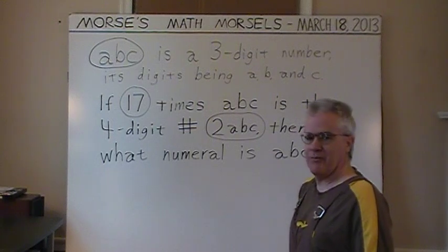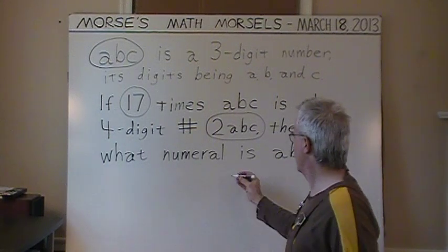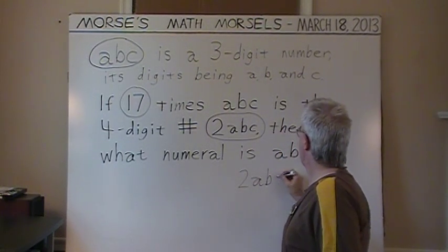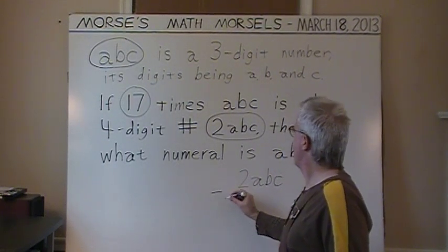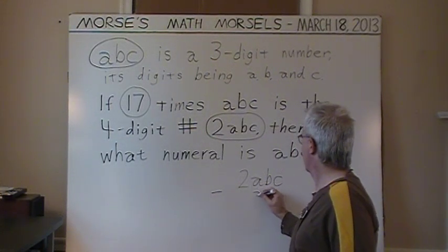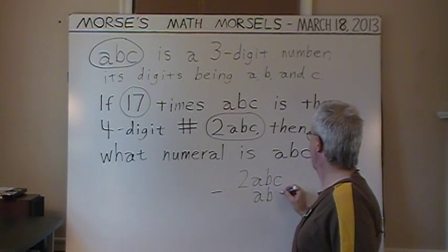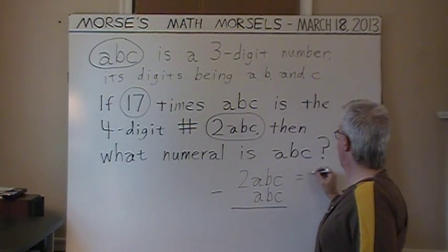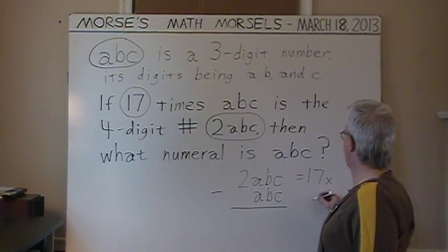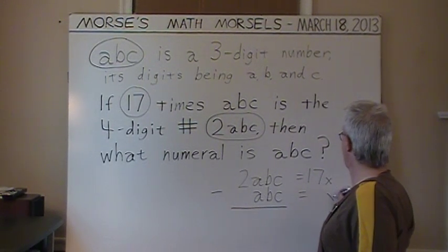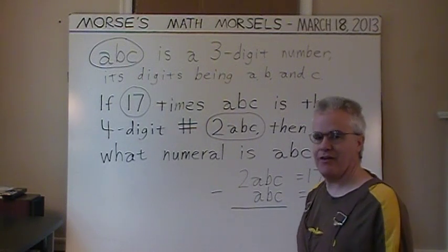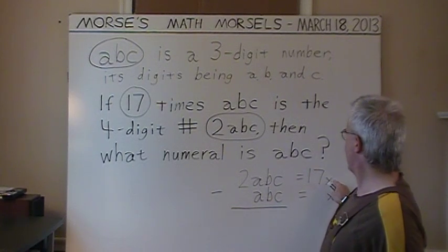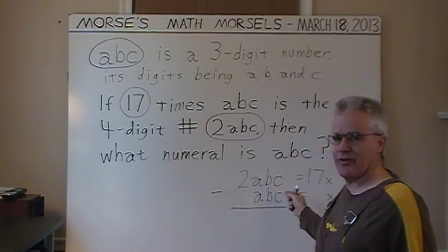This problem is easier than it looks. I'm going to write 2ABC and subtract the original ABC from that. 2ABC equals 17 times some number X, and ABC equals X. So I'm assigning the variable X to the three-digit number ABC, and then 17 times X is the 2,000 ABC.